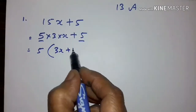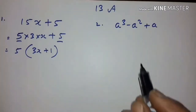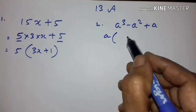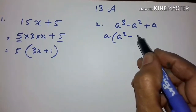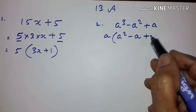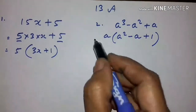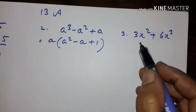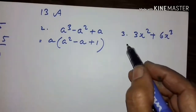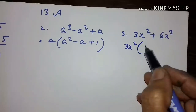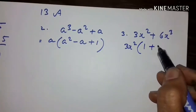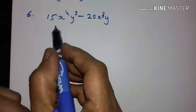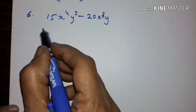What remains is 3x plus 1. In the next expression, in these three terms, A is common, so if you take it out, here A squared remains, here A remains, here only one remains. In this problem, 3x squared is common. If you take it out, then here one remains and here 2 and x.